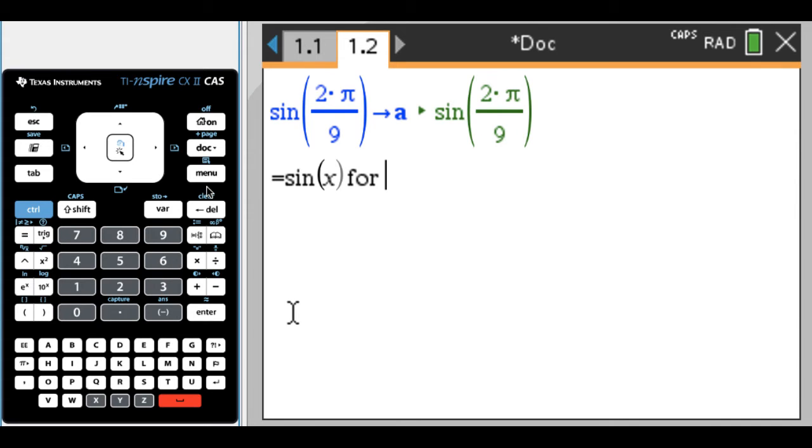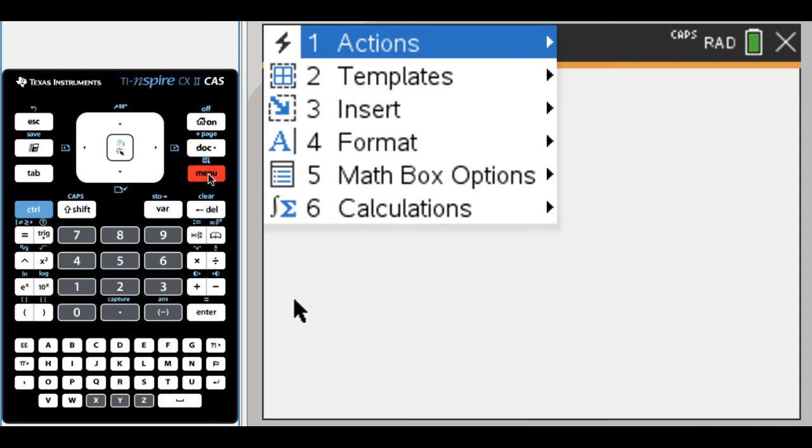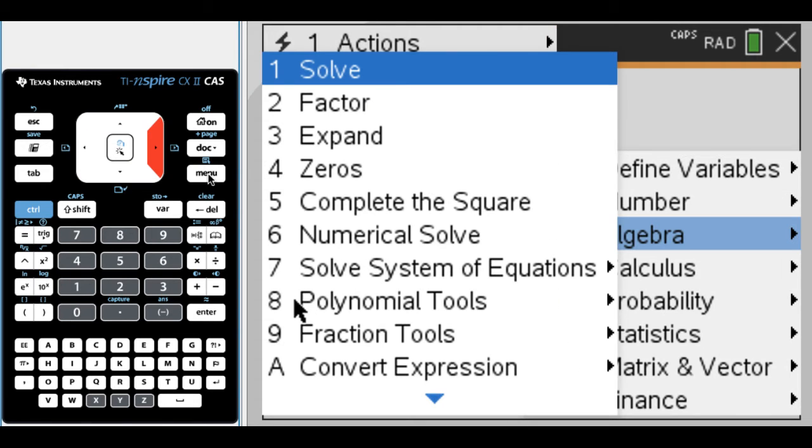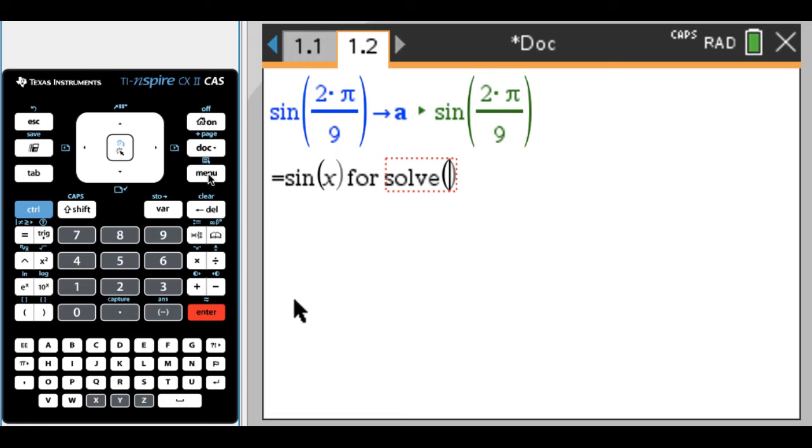And now what I'm going to do is this is kind of the magic part. I'm going to put in another math box, so for me that's command M, or you can do menu, insert, math box, or the shortcut, whatever it is on the handheld. So I'm going to use solve. Everything that's available on a calculator is available here - you just have to find it. It's in calculations, algebra, and I want to solve.